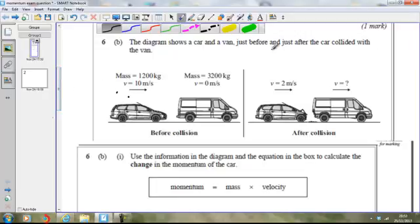And the main part of the question describes the situation before a collision between a car and a van and after a collision. It gives you the mass, velocity of the car, the mass and velocity of the van. Notice that the van isn't moving because it's got a velocity of zero before the collision.